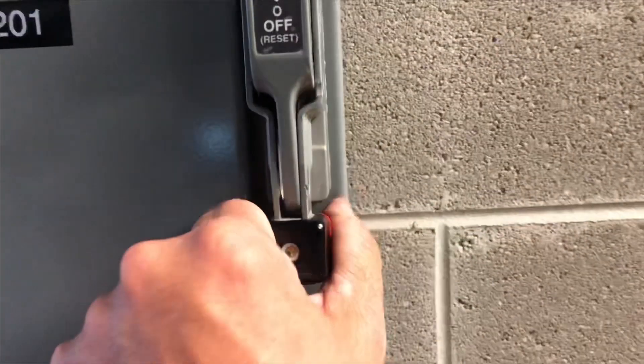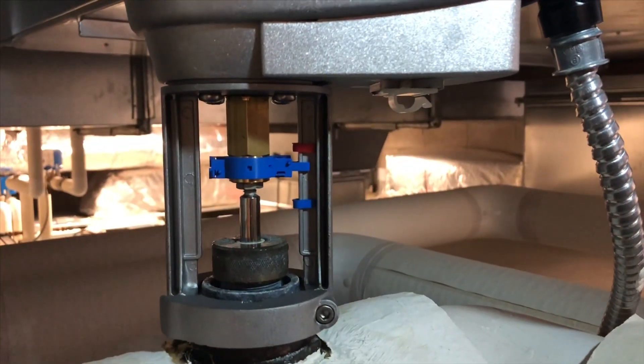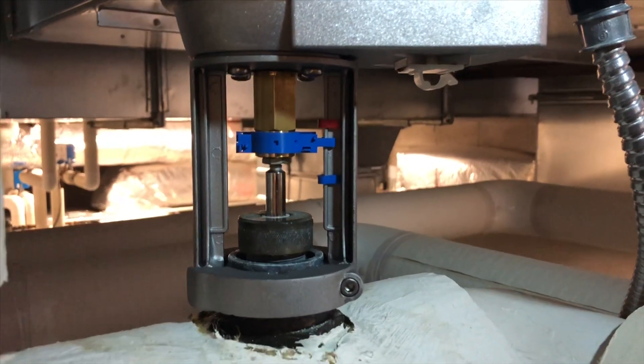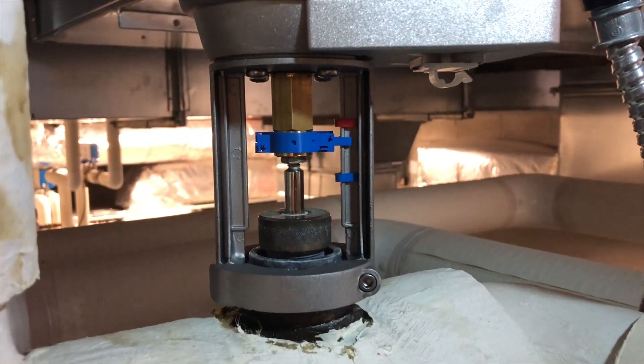I'm going to turn the power back on to our air handler. And put it on auto. And then we will turn on our controller. And our controller's on. And we'll see if we have any movement on our valve. Our cooling valve has done its calibration. It is holding its position and functioning properly.